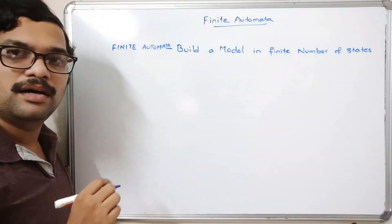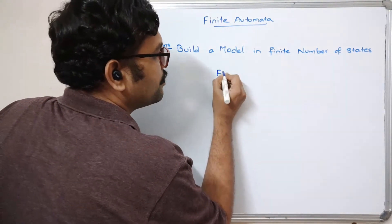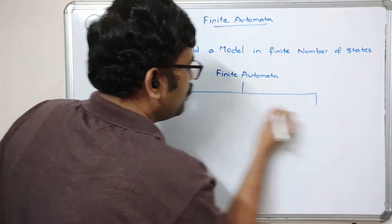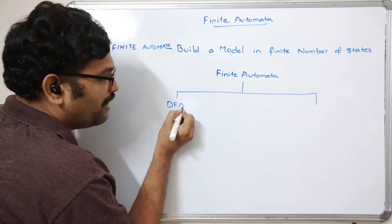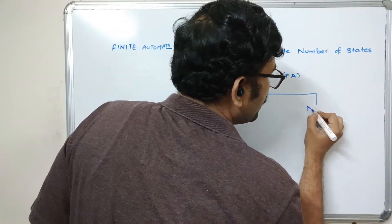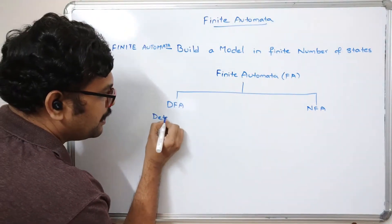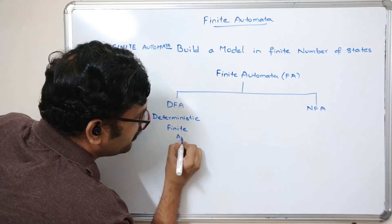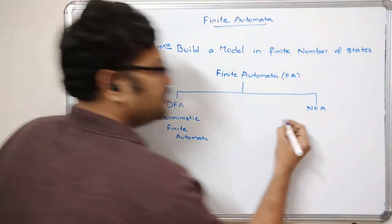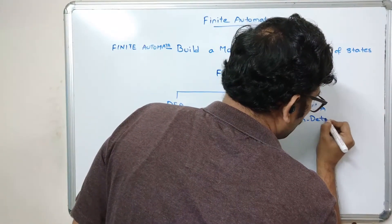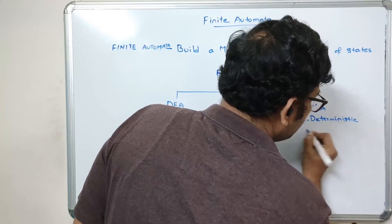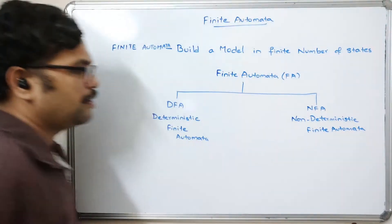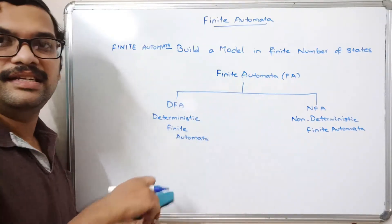This finite automata is divided into two categories. One is DFA — where FA stands for finite automata — and the other is NFA. DFA means deterministic finite automata, and NFA means non-deterministic finite automata. So the finite automata is classified into two categories, DFA and NFA. By default, the finite automata will be considered as a DFA.